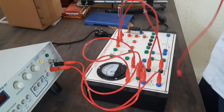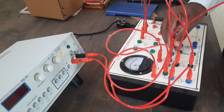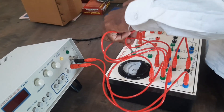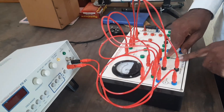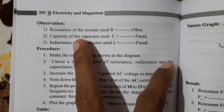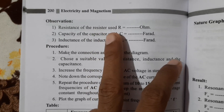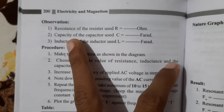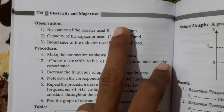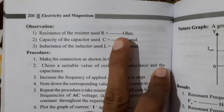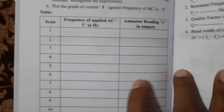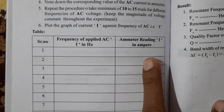Next, set the resistance value on the resistance box. In the observations, you have to note down the resistance of the resistor used on the apparatus, the capacitance of the capacitor, and the inductance of the inductor — whatever values you have used, write them down. The tabular column requires you to note down the frequency and the corresponding current readings.